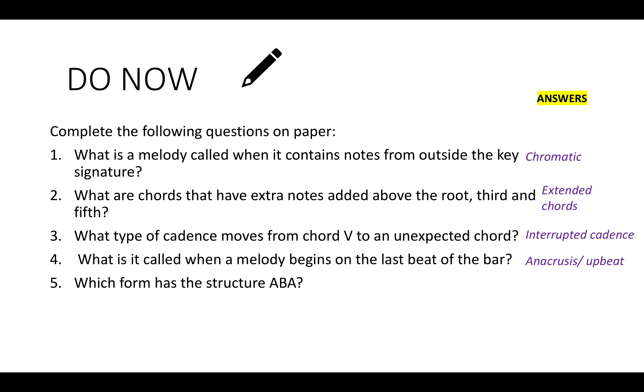And the structure that has ABA has three sections, so it's called a ternary form. You can remember the T for tricycle, which has three wheels.